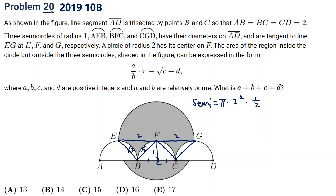The second piece consists of four parts. Each piece is a unit square minus a one-fourth circle, so it's one minus pi over four. Times four pieces, this gives part two equal to four times (one minus pi over four), which is four minus pi.